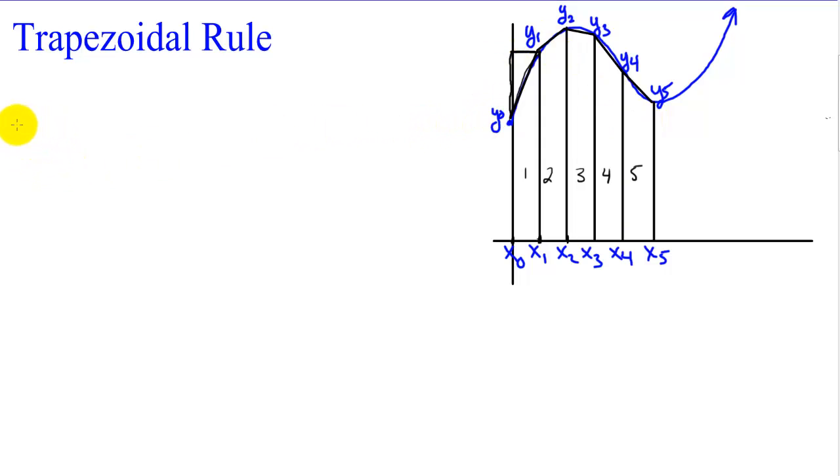The area of a trapezoid is one half base 1 plus base 2 times the height. So we have five trapezoids that we're going to have to find the area of. The first one is one half times the base, which is the y value at 0 here, or in this case x sub 0. So the first base is y sub 0 and the second base is y sub 1.